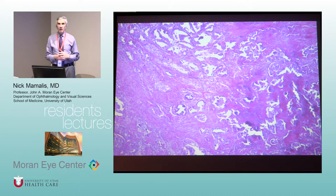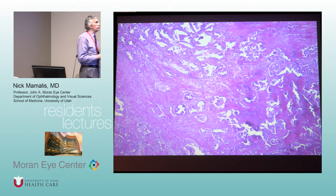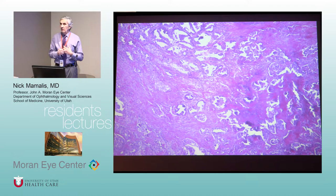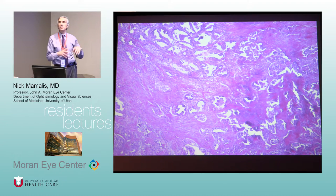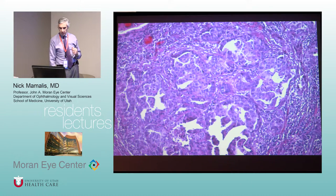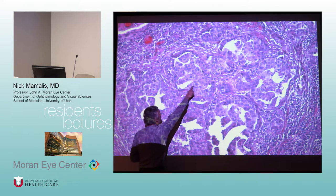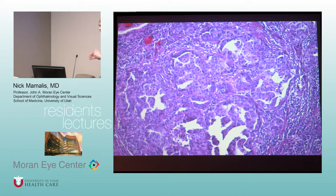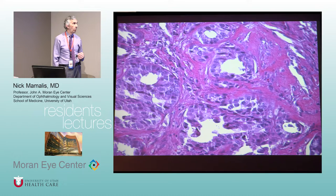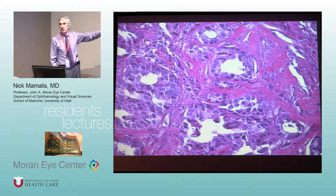This is the one lesion where you definitely want to do an excisional biopsy — remove it whole. If you don't remove it completely it can grow back and change from benign mixed to malignant mixed. Malignant mixed is not as common, but when you look at it you still see proliferation of both cellular elements, but they start to look atypical and dysplastic, with nucleoli and clumped chromatin. These become much more aggressive tumors.